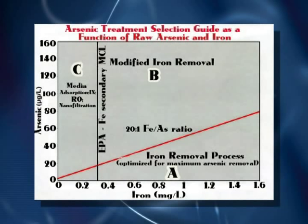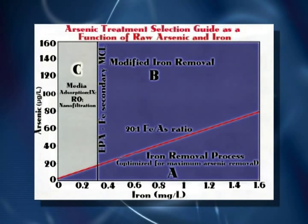Iron plays a unique role in the removal of arsenic, and the presence of iron in the source water will play a big role in treatment process selection. On the chart, the horizontal axis represents iron concentration in the source water and the vertical axis reflects arsenic concentration. The vertical line at 0.3 milligrams per liter iron is the EPA recommended secondary standard. Using the 20-to-1 iron-to-arsenic mass ratio, you can create a graph with three zones to assist in identifying arsenic treatment processes.